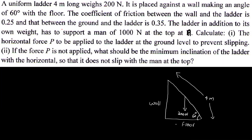The coefficient of friction between the wall and the ladder is 0.25. The coefficient of friction between the ground and the ladder is also 0.25. The ladder, in addition to its own weight, has to support a man of 1,000 N at the top.